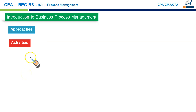Business process management activities are grouped into five categories. The first is design, which involves identifying your current processes and how they should function once improved. The second is modeling — for example, when setting up a new manufacturing process, modeling involves creating a conceptual design.